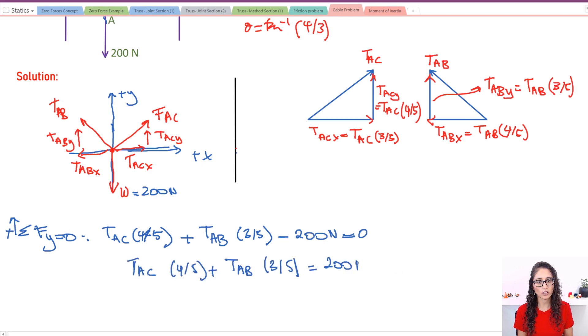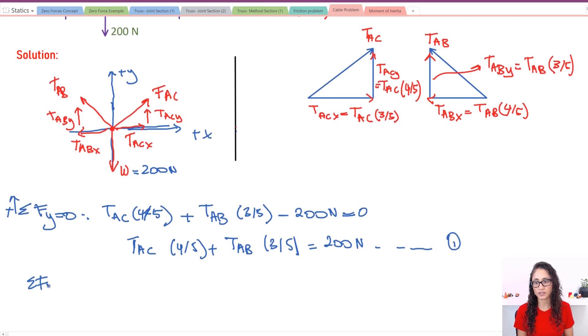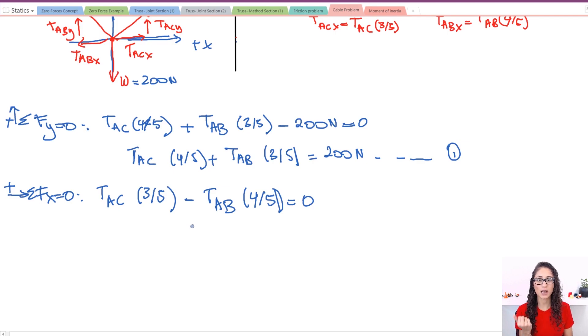Now let's do the second equation, which is the summation of the forces on X equals zero. This is my positive direction. What do we have? I have TAC_x, which is TAC times three over five, and I have minus because my TAB_x is going the opposite direction of this sign we picked. So it's minus TAB times four over five. That's the only two forces on the X direction, so this has to equal zero. Let's rewrite this. We can do it two ways—substitute TAC for TAB or substitute TAB for TAC.